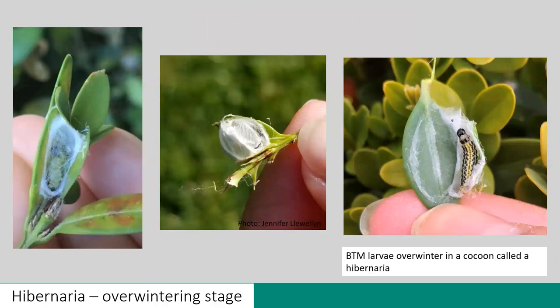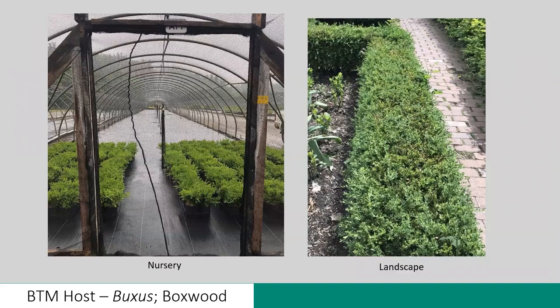BTM does overwinter in its larval stage, usually in the third instar. The larvae will construct cocoons made of webbing between boxwood leaves, and we call this overwintering structure a hibernaria. These can be seen as early as August, but definitely more so in September as we head into fall and winter. The hosts for BTM are all species within the genus Buxus — what we call boxwood here in North America. At nurseries, boxwoods are commonly grown in containers in hoop houses, while in the landscape these plants form hedges.